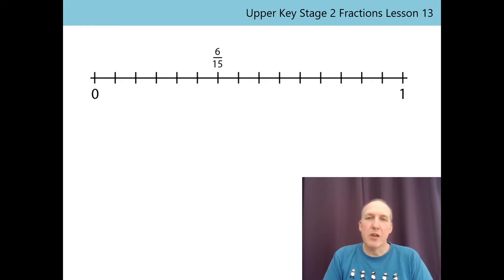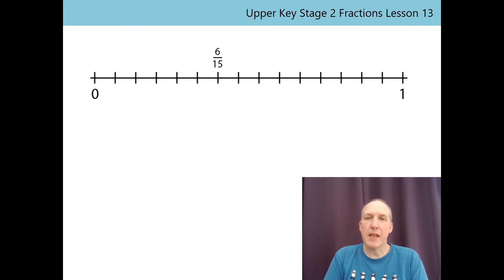We can also show 6/15ths on a number line between 0 and 1. The whole has been divided into 15 equal parts, so each equal part is 1/15th. Here's 6/15ths on the number line. We said that the highest common factor of 6 and 15 is 3, because 3 is the largest number that is a factor of both 6 and 15. So if 3 is the highest common factor, if we mark every third interval, we've now divided the whole in a different way. Look at the blue lines — there are now 5 equal parts. Each equal part is 1/5th of the whole. 6/15ths lines up with 2/5ths.